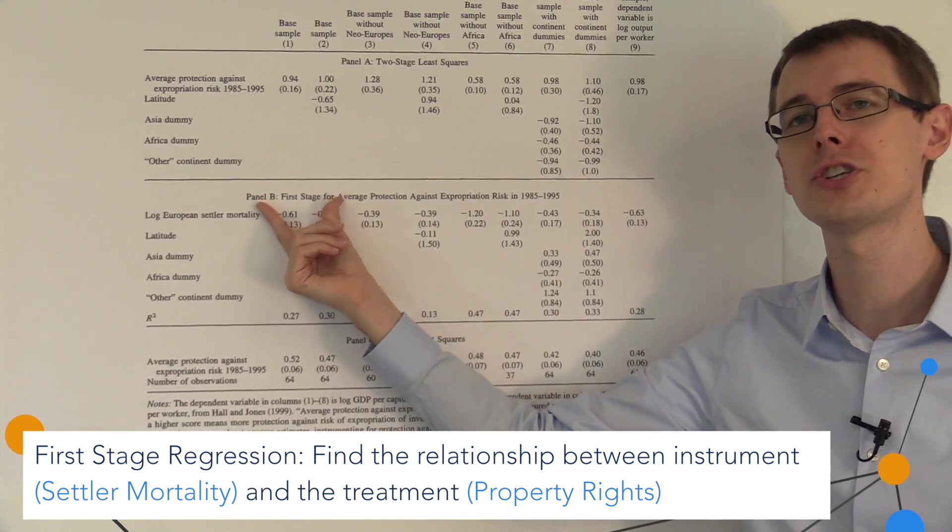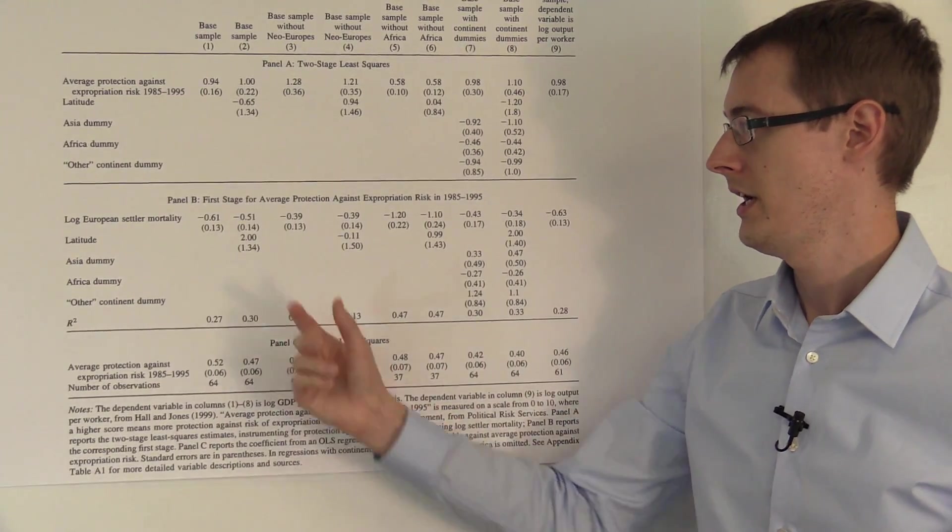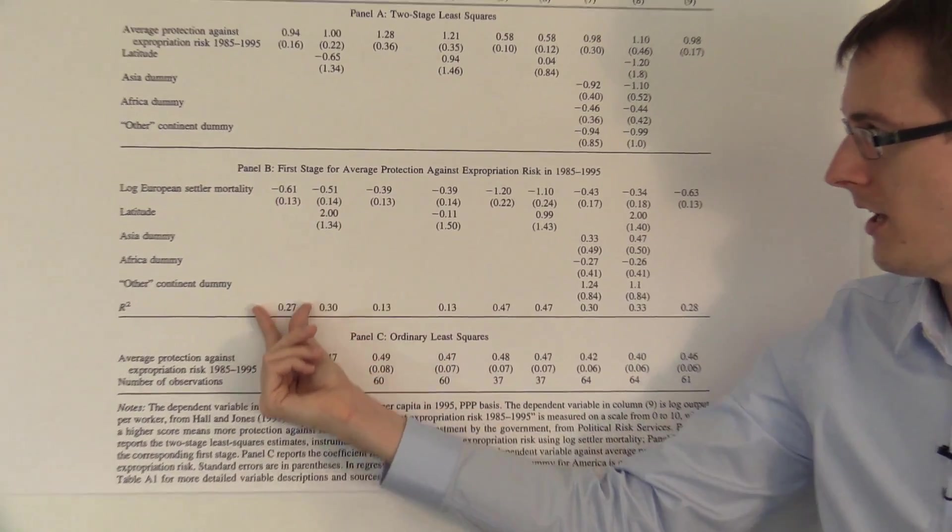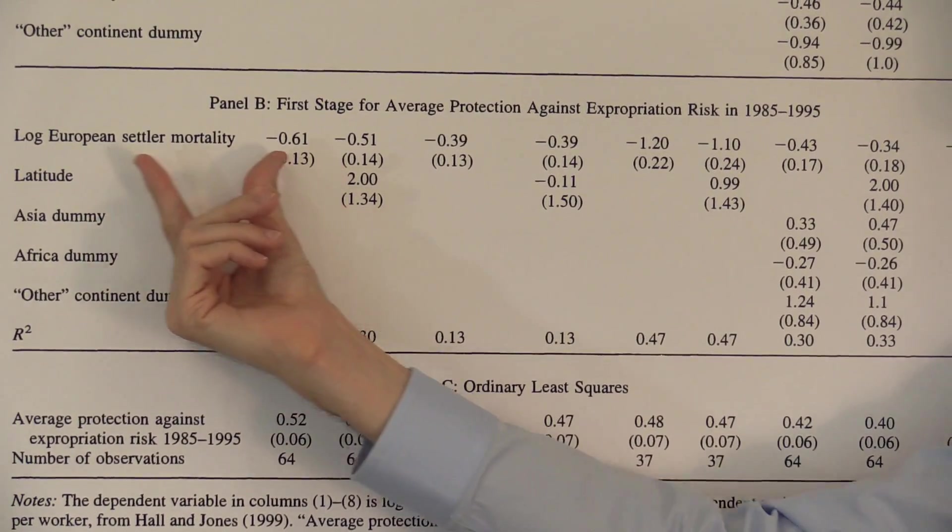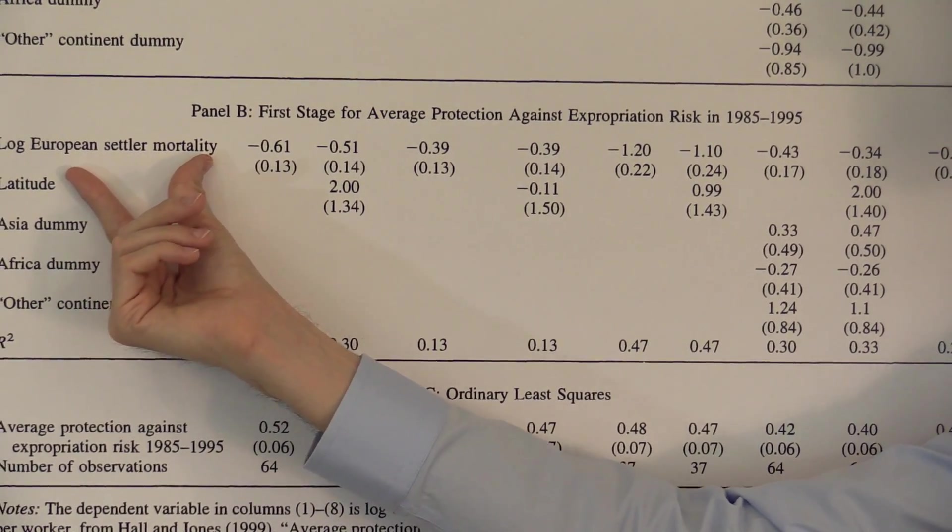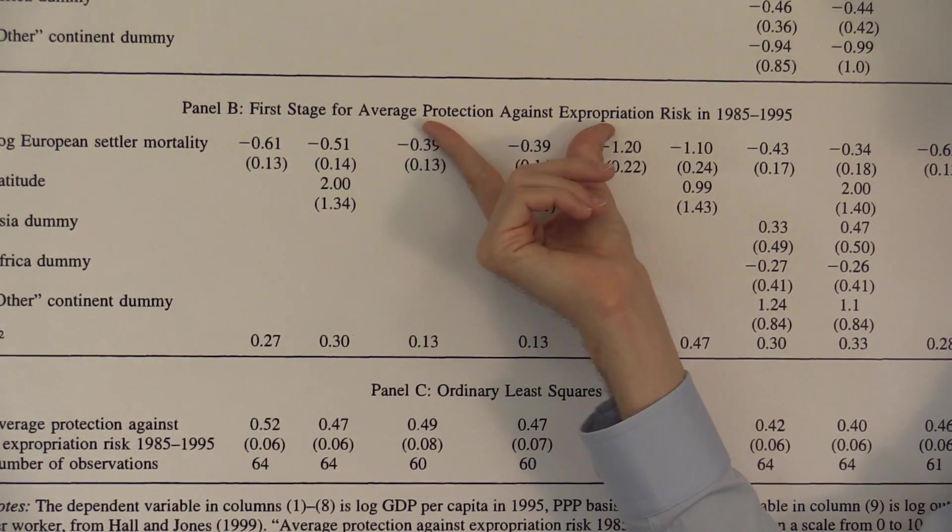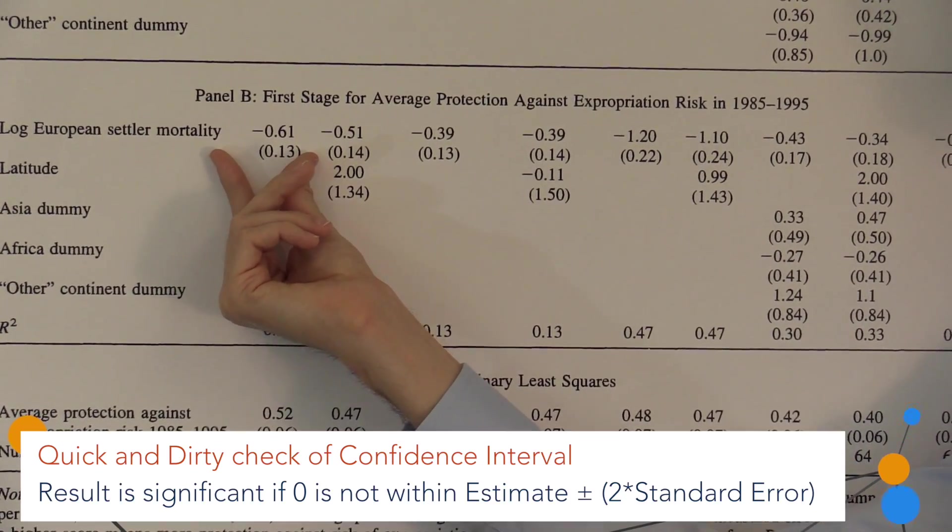So these are the first stage regressions that we talked about in earlier modules. So here in the first column, they're showing the correlation between the instrument log European settler mortality and the treatment variable, average protection against expropriation risk.